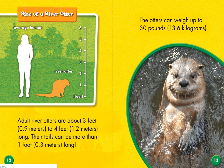Adult river otters are about three to four feet long — about as tall as some of the shorter of my preschool friends. Their tails can be more than one foot long, like as long as a ruler. Otters can weigh up to 30 pounds, which is about how much a three-year-old weighs. That is bigger than you would think!